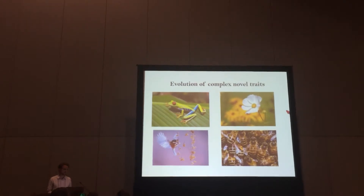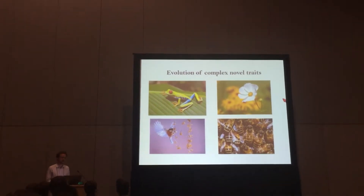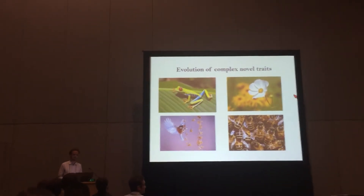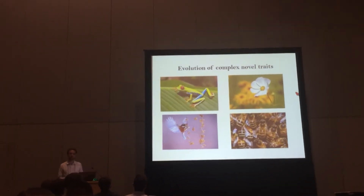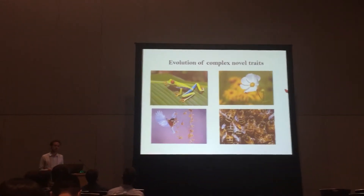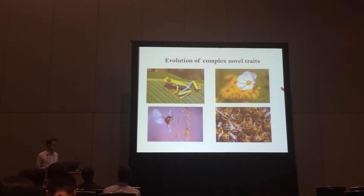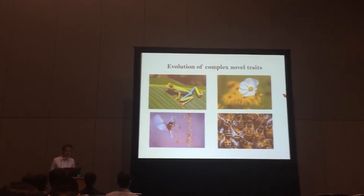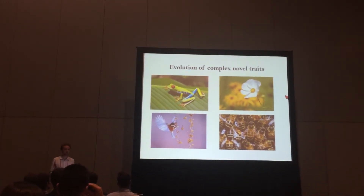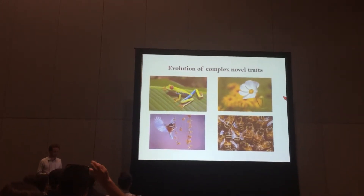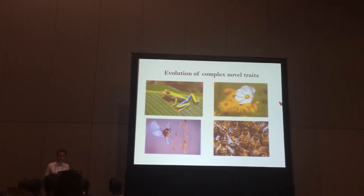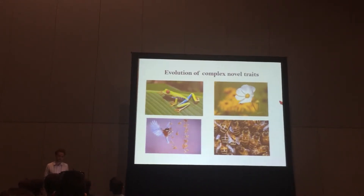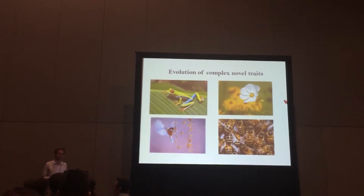One of the key questions in evolution and biology has always been how complex novel traits or complex organs can actually evolve — for instance, a vertebrate eye, a wing, an ancient blue flower, or indeed a behavioral trait like a new social lifestyle.